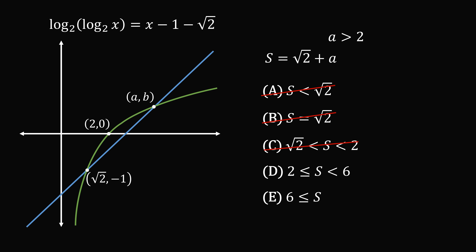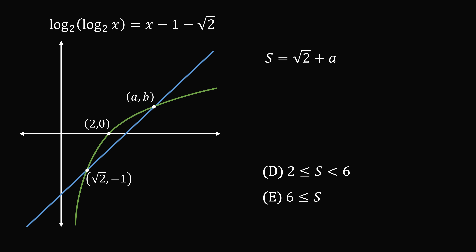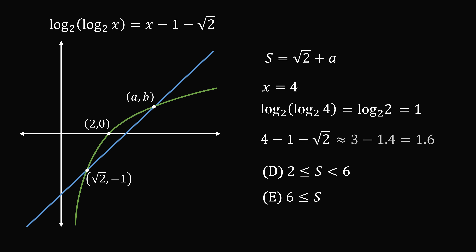Is s between 2 and 6, or is it greater than or equal to 6? Let's test x equals 4. Log base 2 of log base 2 of 4 equals log base 2 of 2, which equals 1. Substituting into the linear equation gives 4 minus 1 minus root 2, which is approximately 3 minus 1.4, equaling about 1.6. So on the logarithmic curve we have the point (4, 1), but on the linear curve we have approximately (4, 1.6), which is larger. This means x equals 4 is to the right of the intersection point, so a is less than 4.